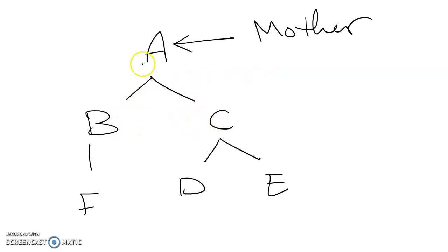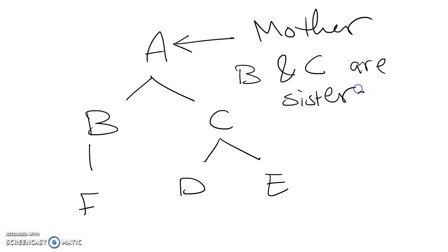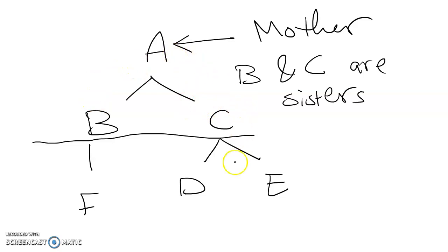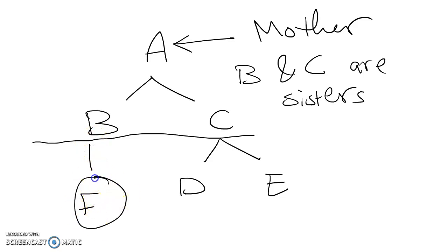B and C are the daughters of A, so they are sisters — B and C are sisters. They are at the same level and have the same mother. B is the daughter of A and C is the daughter of A. Now, C is a mother for D and E, and B is the mother for F. So F is a daughter of B but has no sisters. Whereas D and E are sisters — they are daughters of the same mother, C.